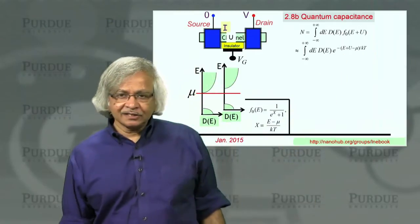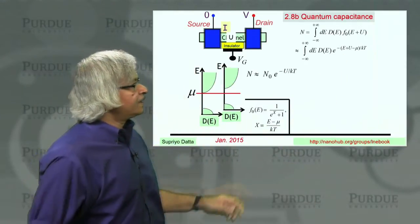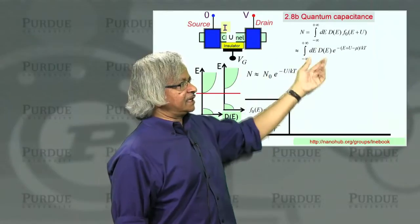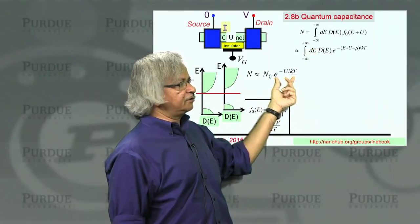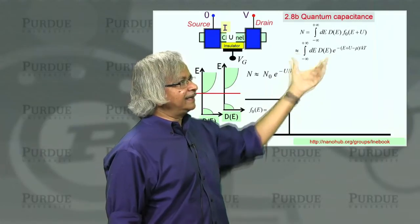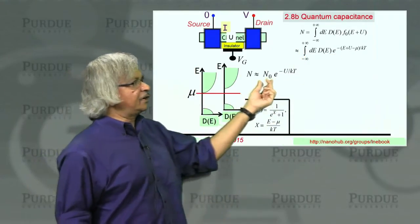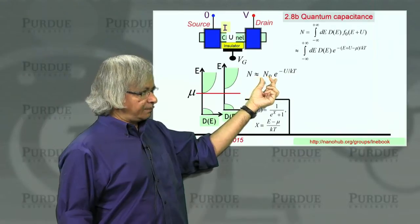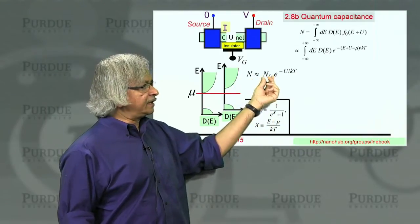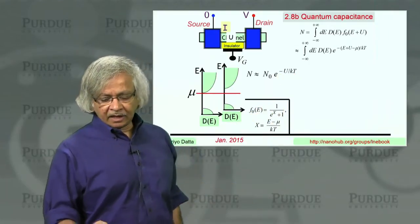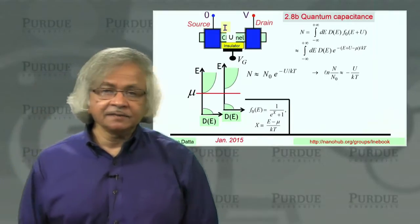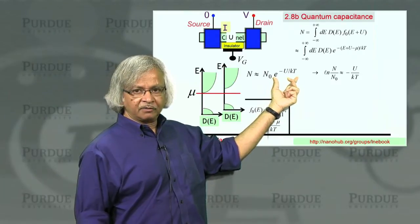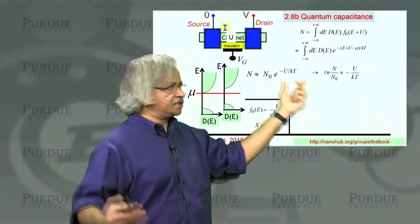If you use that approximation, the Fermi function can be replaced with a simple exponential function. In this form, the algebra gets relatively simple. You have the e to the power minus U over kT, which you can pull out of the integral because it doesn't depend on energy. Whatever's left inside is N0 — what you had when U was equal to zero. So N is approximately equal to N0 times that exponential. Now you can take the natural logarithm of both sides: the natural log of n over n0 equals the exponent, since logarithm of an exponential is just the exponent.